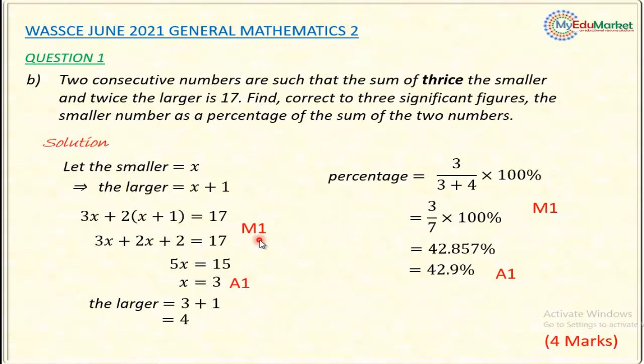I have first the method mark, that is M1 mark, 1 mark for the method, where I get the equation, the correct equation. Meaning you change that: 3 times smaller, add to twice the larger, is 17. Where you write that equation correctly, you have one method mark. Solving that correctly to get the size of the smaller number, that is 3, you have another mark, A1, the accuracy mark. And finding the percentage of the smaller to the sum of the two numbers is another method mark, M1. And the final result, after approximating to 3SF correctly, you have 42.9%, you have another accuracy mark. So this gives a total of 4 marks. This is the mark allocated to this question in the WASSCE marking scheme.